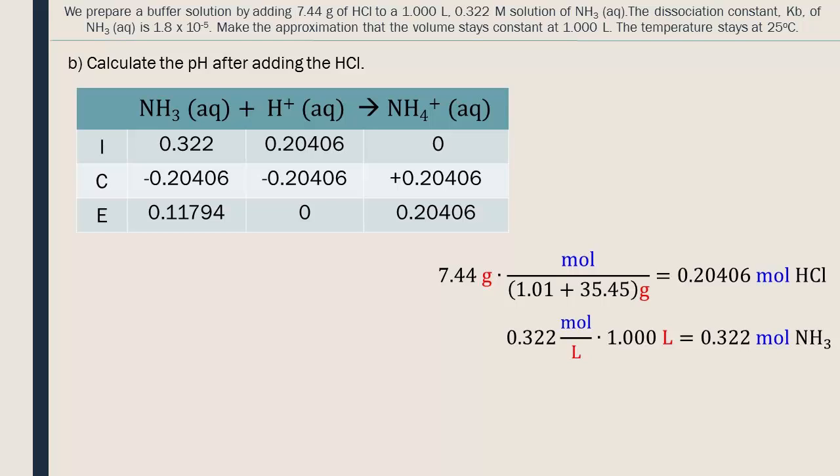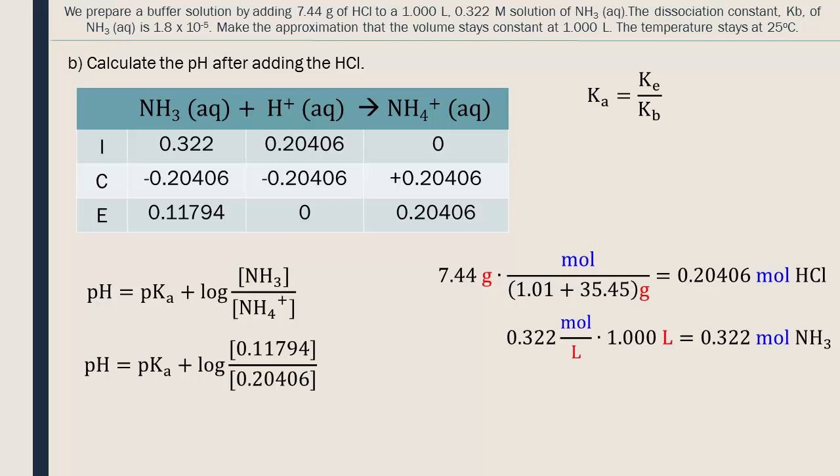Now we need to find the pH. We will use the conjugate acid to base ratio in the Henderson-Hasselbalch equation. We insert the concentration of the base at the top and that of the conjugate acid on the bottom. We don't know Ka, but we can find it from our Kb. To do so, we divide the constant of water by Kb. At 25 degrees Celsius, K of water is 1.0 times 10 to the negative 14.